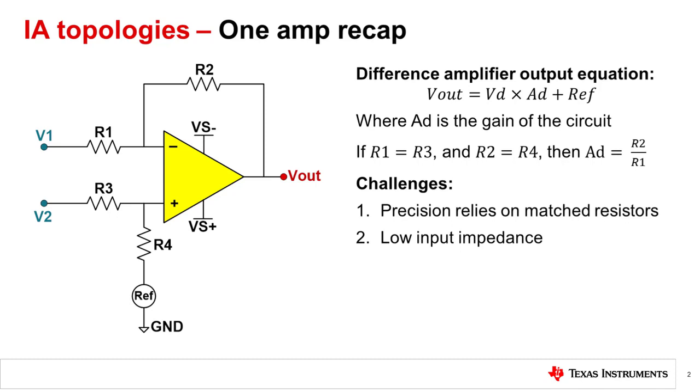Beyond the fact that its precision heavily relies on matched resistors, this topology has low input impedance. An integrated 1-amp IA can resolve the first issue of resistor matching via process and development, but the input impedance still remains a concern for many applications.